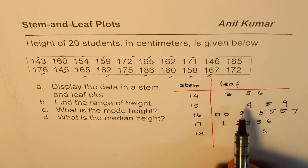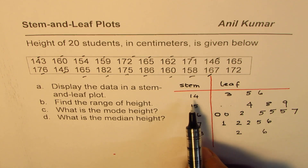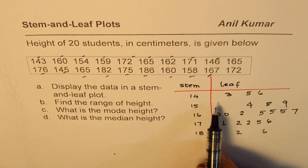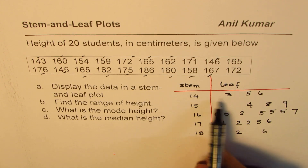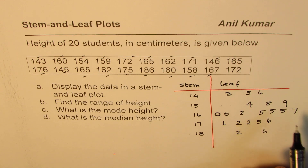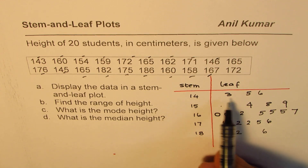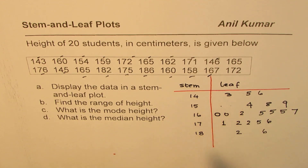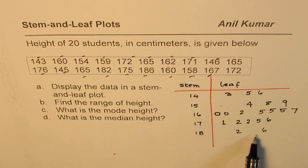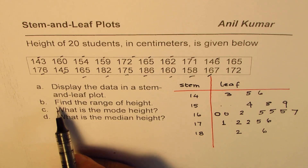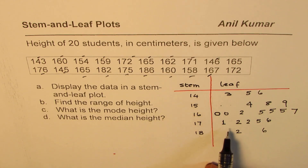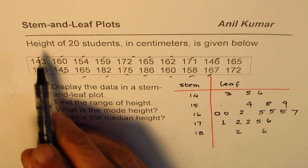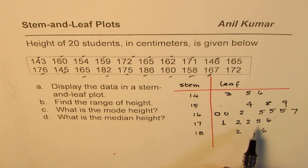Sometimes you may need to make another clean copy so the numbers are written more neatly — for example, 1, 4: 3, 5, 6, 8, 9 and so on. But this version also works. Now let's look into part B. The stem and leaf plot has been drawn, so part B is to find the range of height.